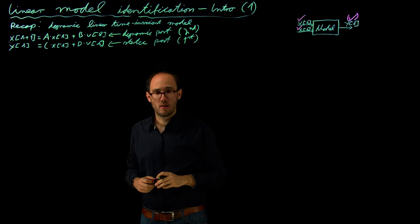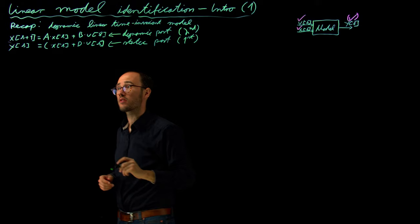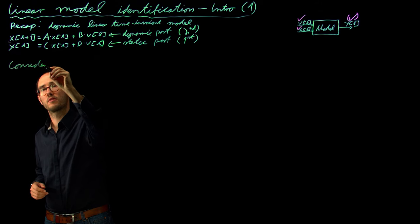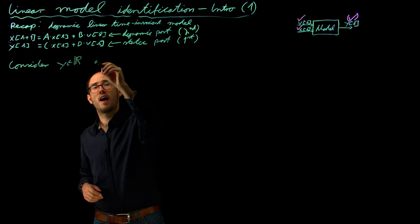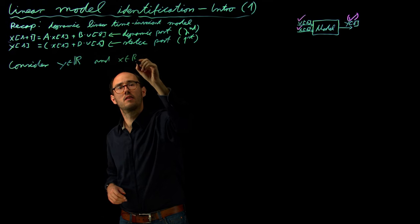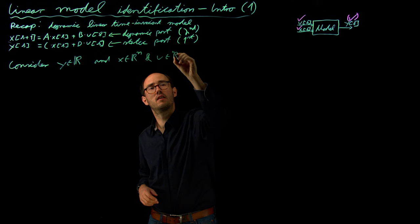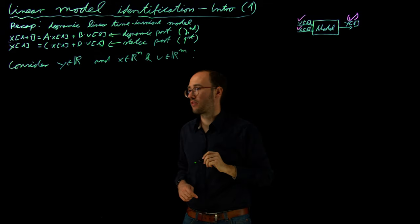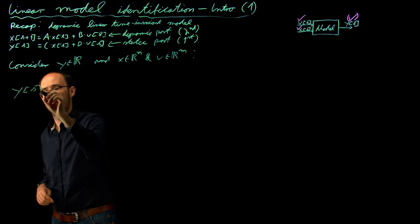With these assumptions, we will describe how to rearrange measurements at different time steps. We first consider a single time step measurement with a scalar output Y from the real numbers, with the state vector of dimension N and additional inputs of dimension M for the D term. With this scalar measurement assumption, we can write down the measurement equation for one time step.